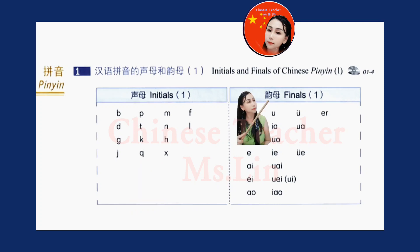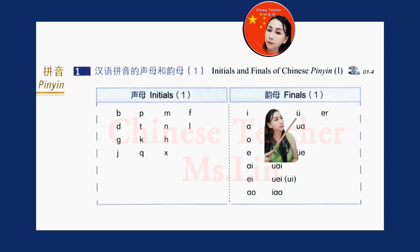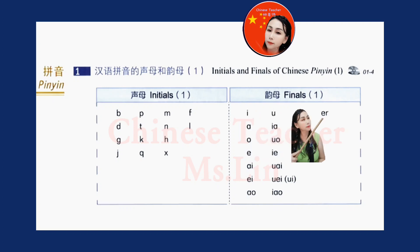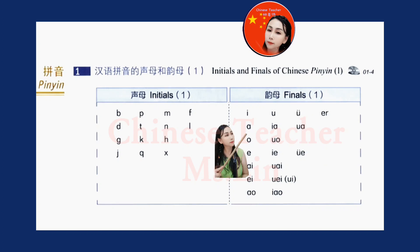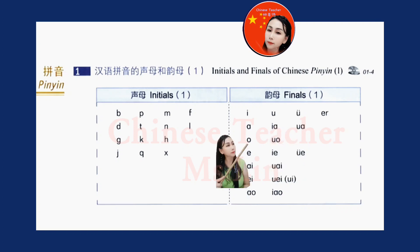孕 韵母 — Finals one. 一 一. 乌 淤. 淤. 耳 以. 欧 过.